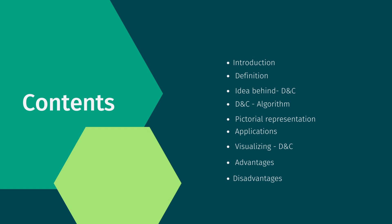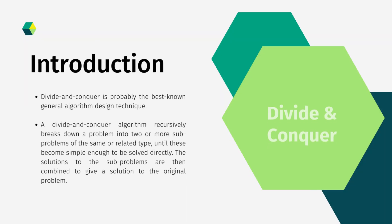The divide and conquer is a best-known algorithm design technique. It is based on the recursion concept. This algorithm works by recursively breaking down a problem into two or more sub-problems of the same type, until these become simple enough to be solved directly. The solutions of the sub-problems are then combined to give the solution to the original problem.